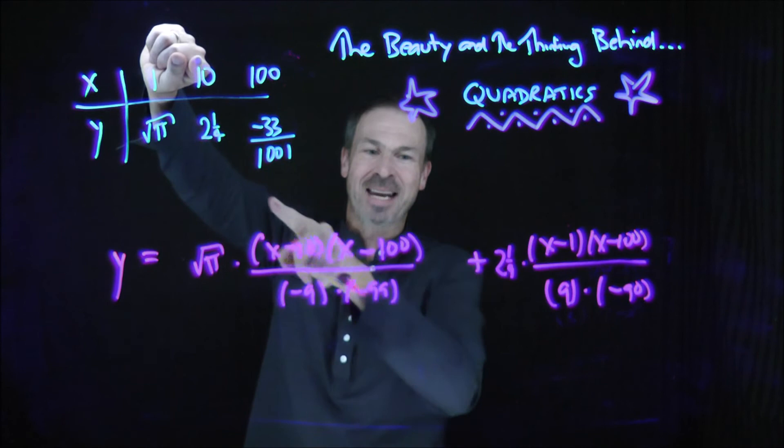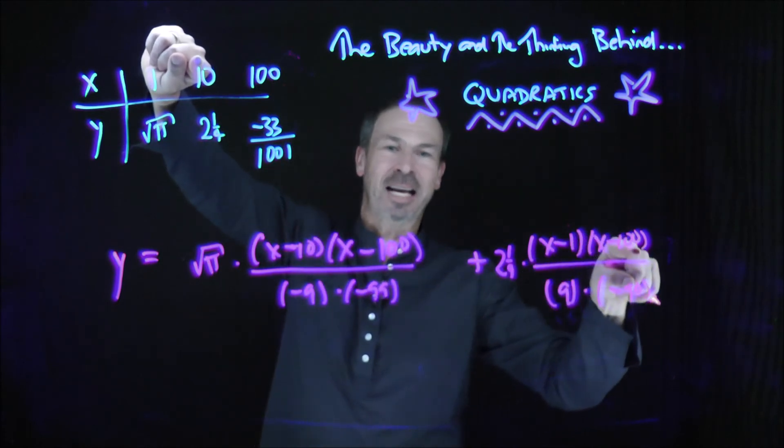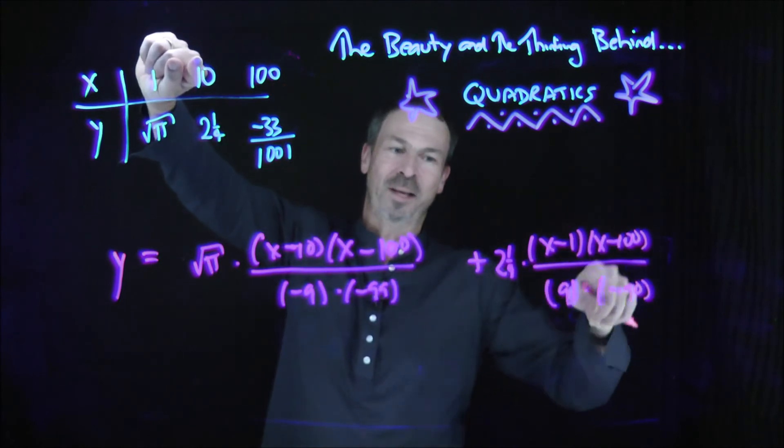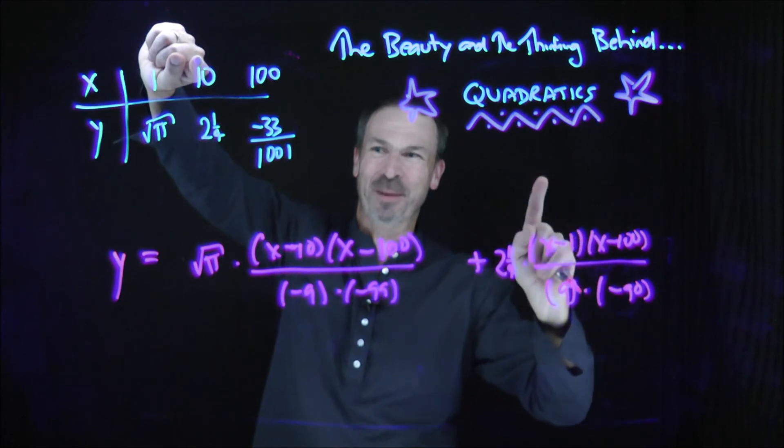I think that will do it because when x is 10, I get 9, negative 90, 9, negative 90. All that's 1, 2 and a quarter times 1. And finally, this third term I want to vanish at x equals 1, vanish at x equals 10. So I want an x minus 1, x minus 10.